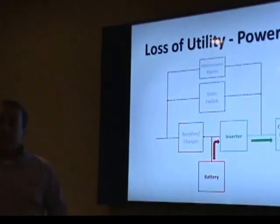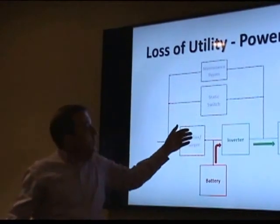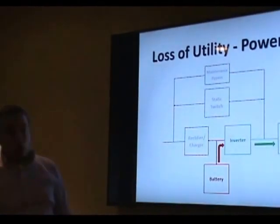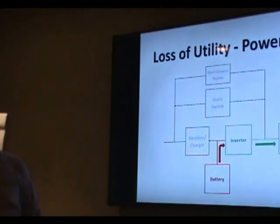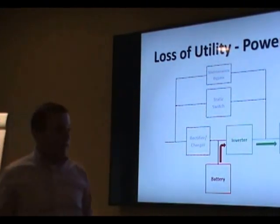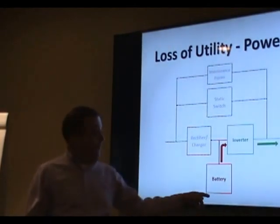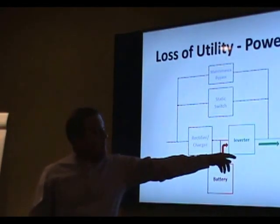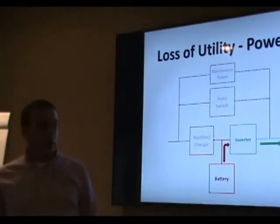In the event that there's a power outage, all these gray boxes here are de-energized, so you have no power going to your rectifier charger, no power going to the static switch, no power going to the maintenance bypass. The only power you have is the battery system. The battery basically feeds the inverter, the inverter makes AC power and pumps it out to the computer load.